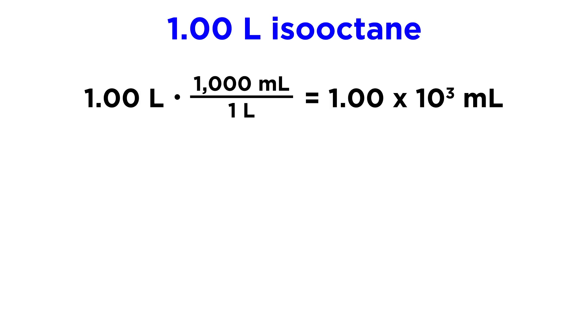Now, as we said, we have that density so we can convert to grams. 1.00 times 10 to the 3 milliliters times 0.692 grams per milliliter. Milliliters will cancel and we'll get 692 grams.